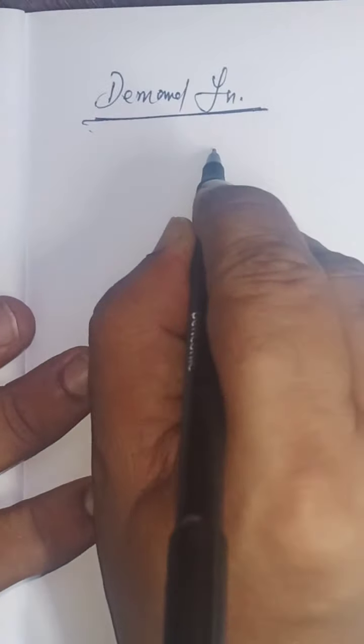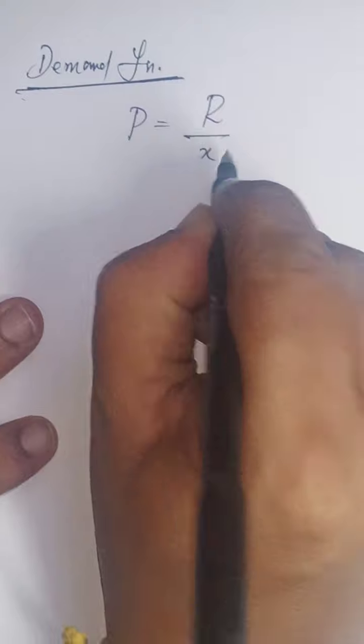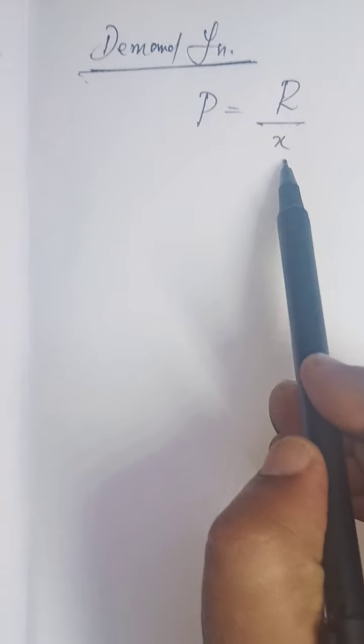Generally we write the demand function P = R/x. R/x is the average revenue and the demand function, same formula.